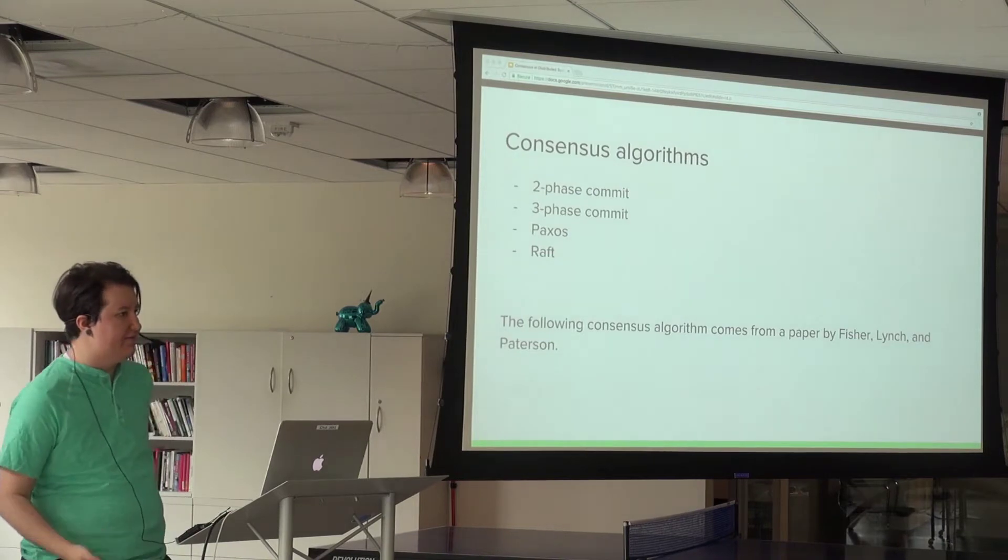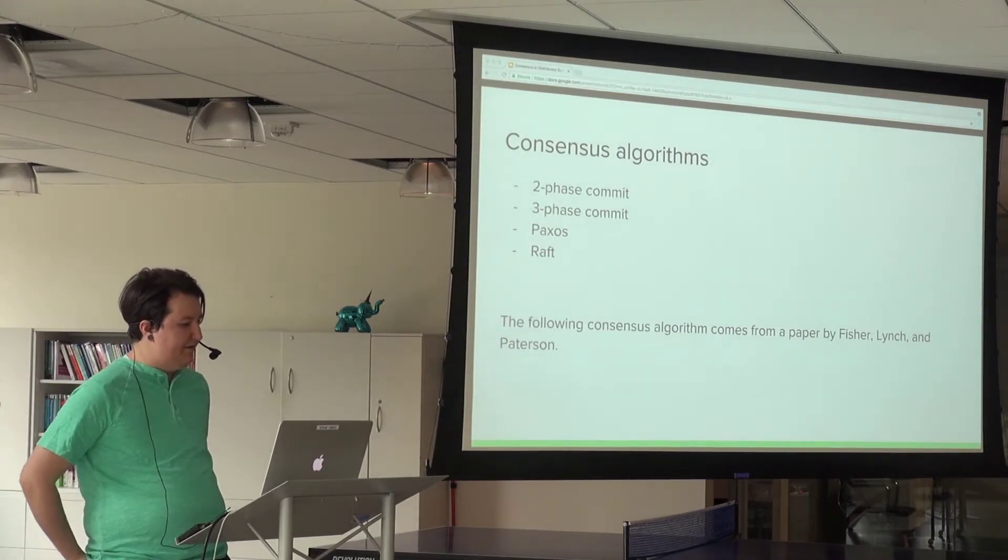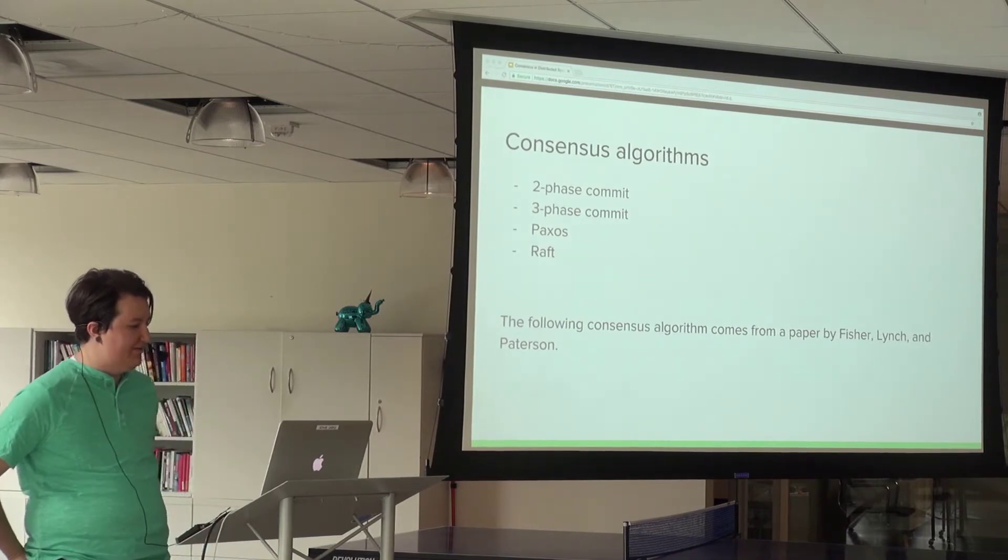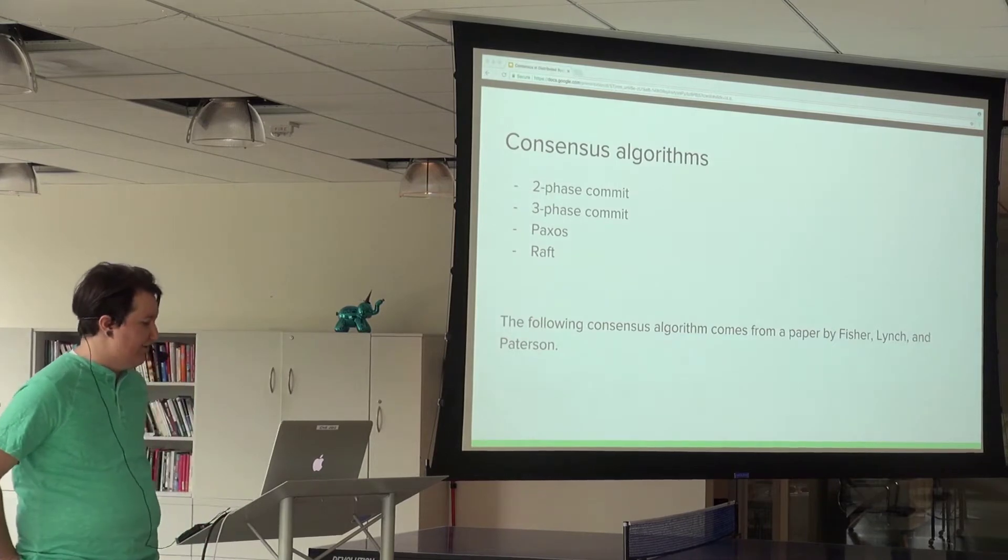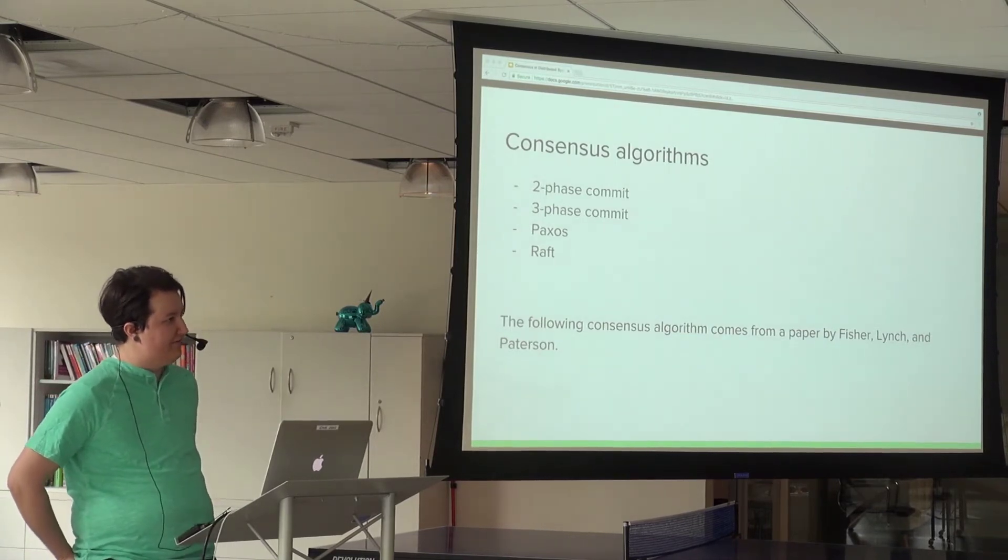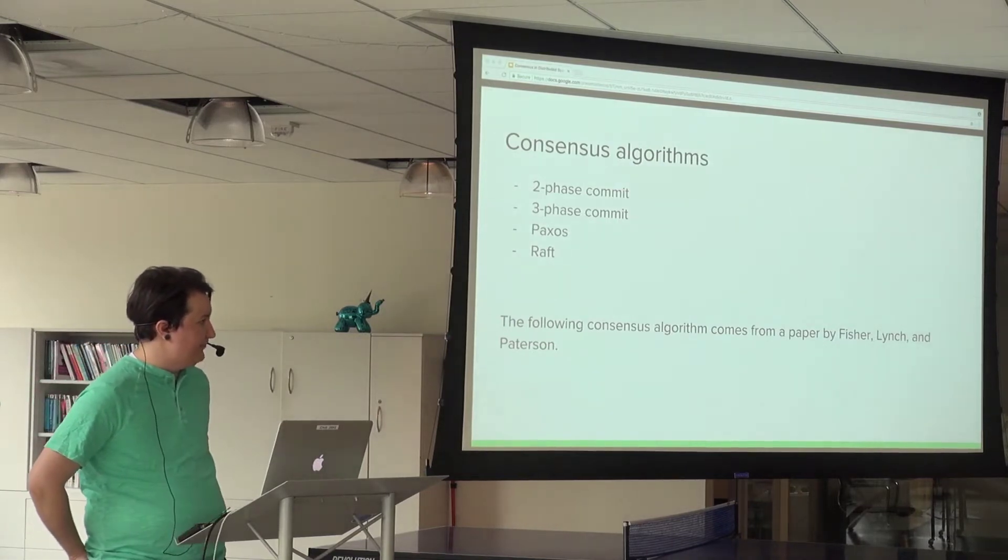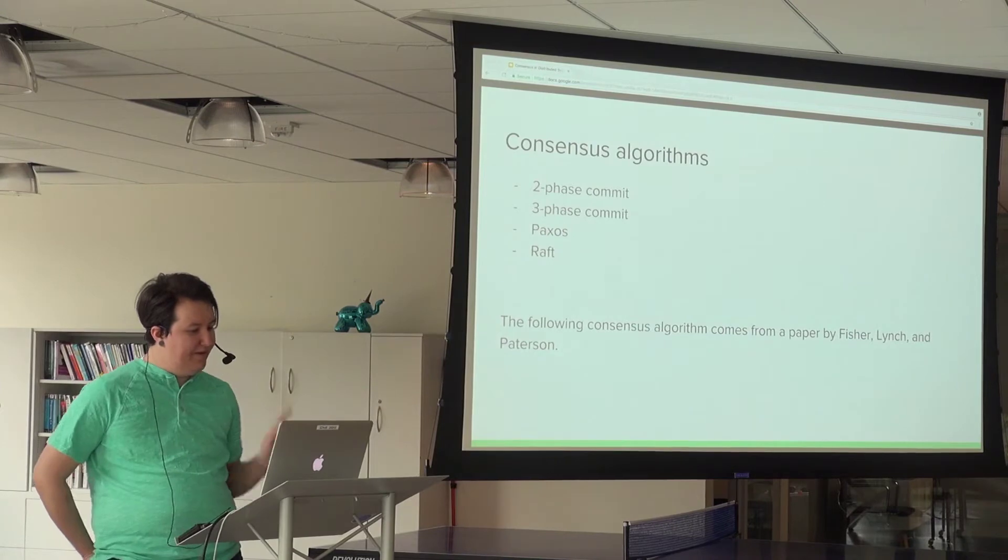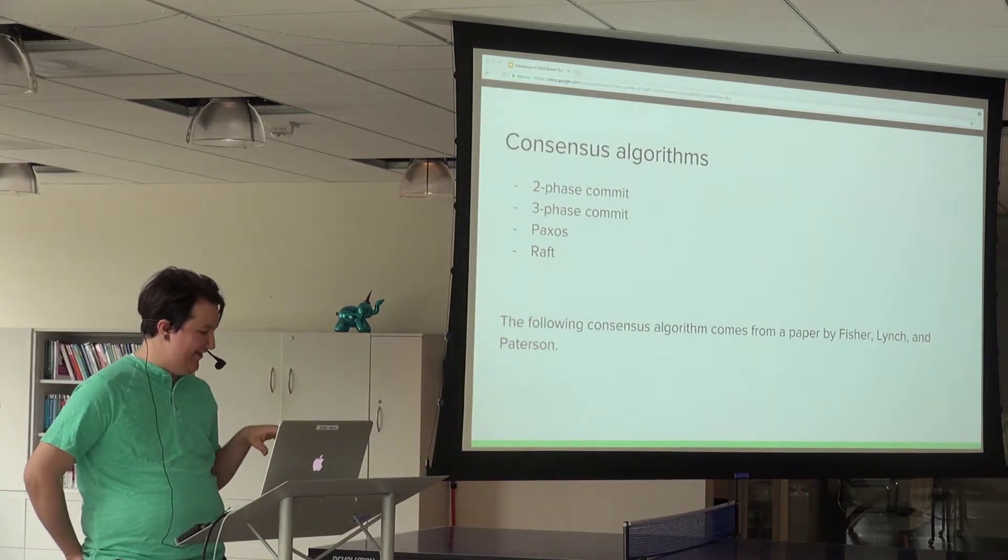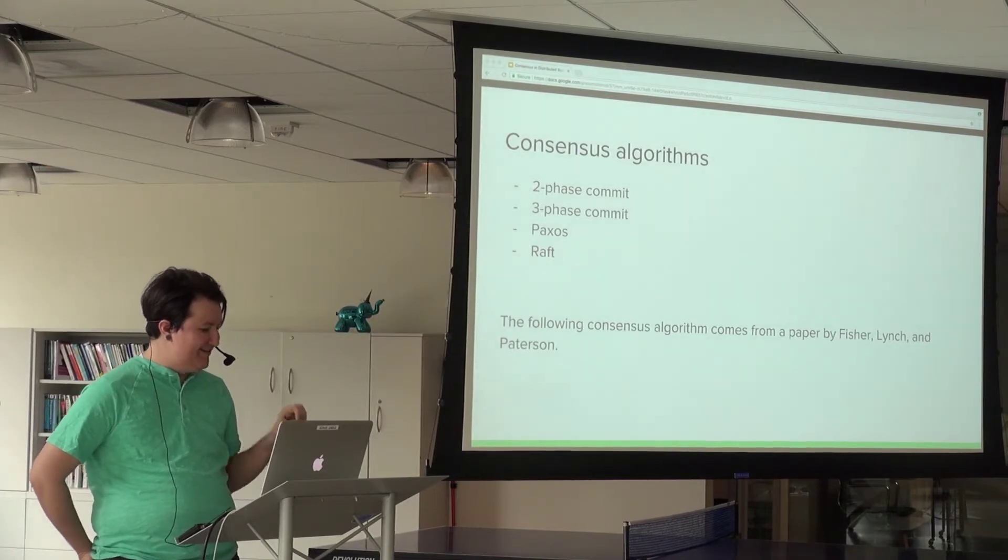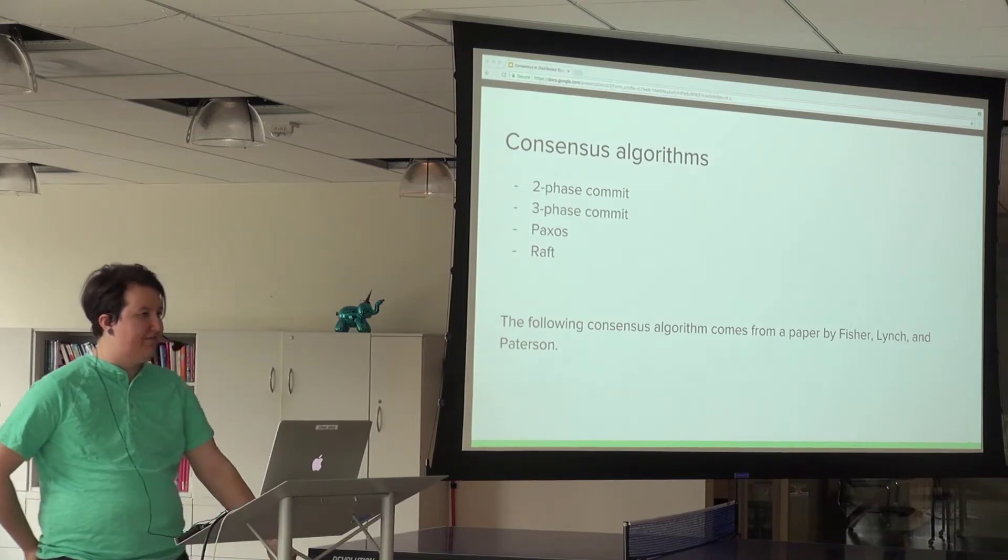There are a variety of different consensus algorithms suitable for different things. In your standard client-server model, two-phase and three-phase commit are very popular. You also have Paxos and Raft, which is used by Consul and etcd. I'm going to present one that's not really used by anybody, but it's a simple protocol for instructional purposes from a 1985 paper by Fischer, Lynch, and Patterson.